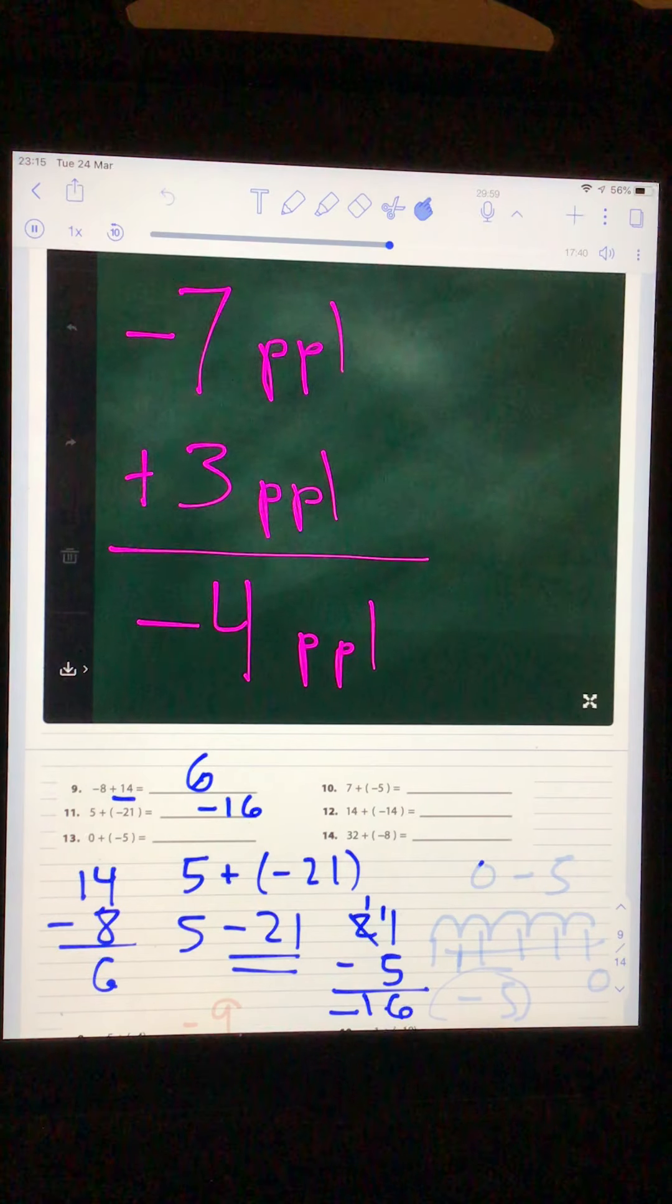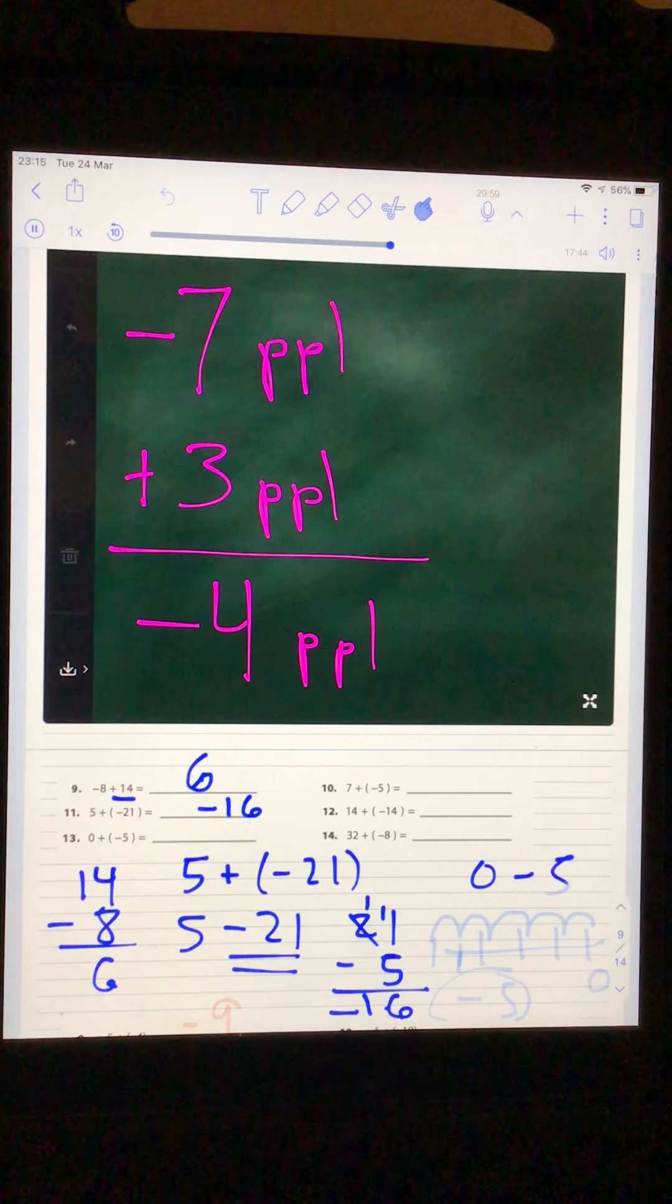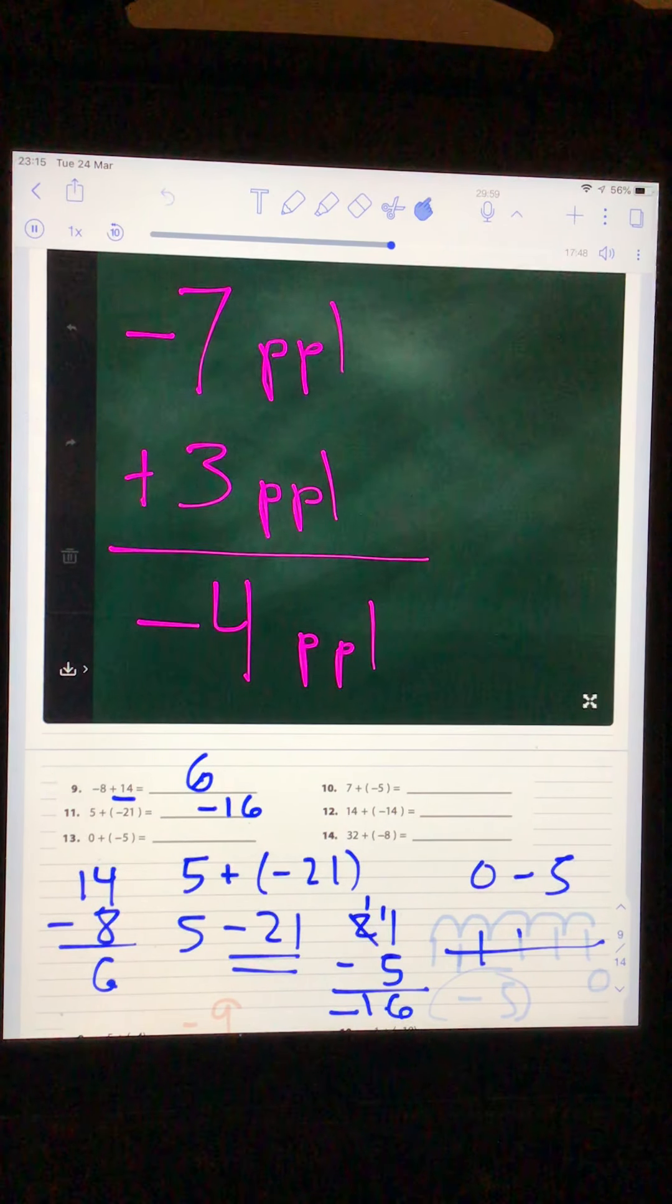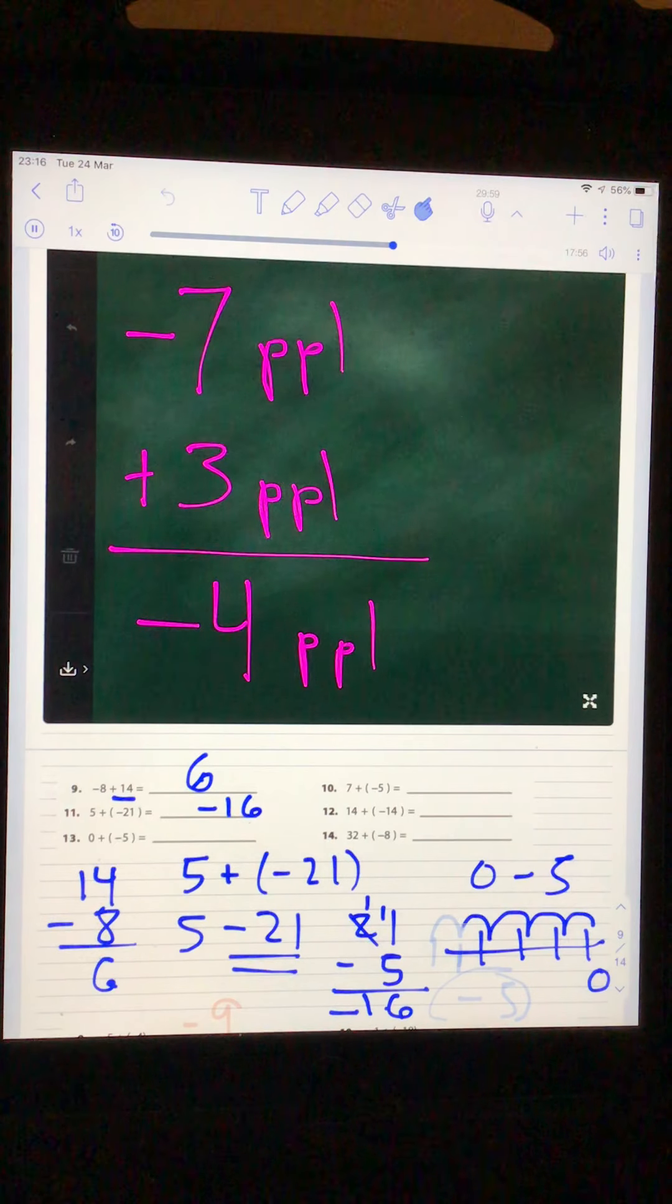And the last one here, zero minus five. Whoa, some people might think that looks confusing. Let's visualize it. Let's cheat. Let's make a number line. If this is zero, what's happening? They're subtracting five. You're going to bunny hop five this way. So you're going to end up at negative five. That's that. All right. Let's move on.